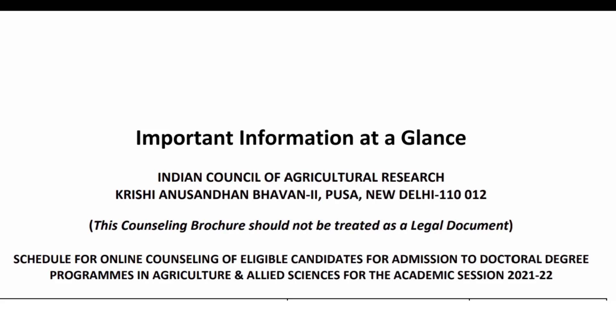Hello everyone, welcome back. As we all know, the starting of candidate registration, display of seat metrics, and choice filling will be started from 17th of November 2021. In this section we are going to discuss each important date you should note for the online counseling of eligible candidates for admission to degree programs in agriculture and allied sciences for the academic session 2021-22.